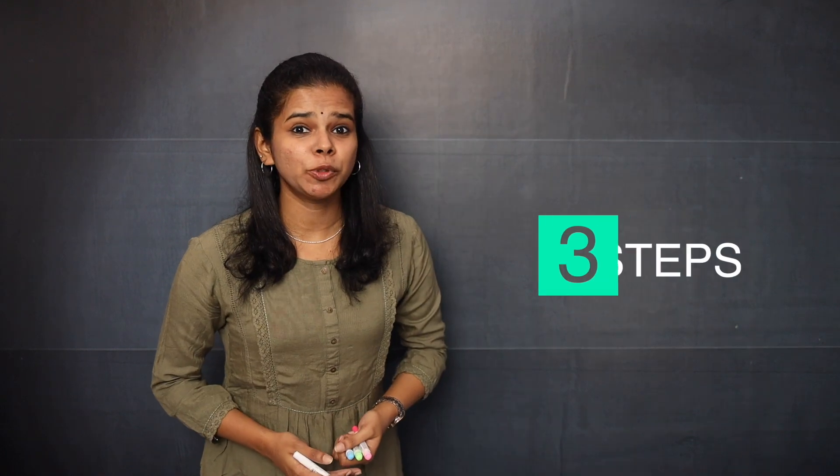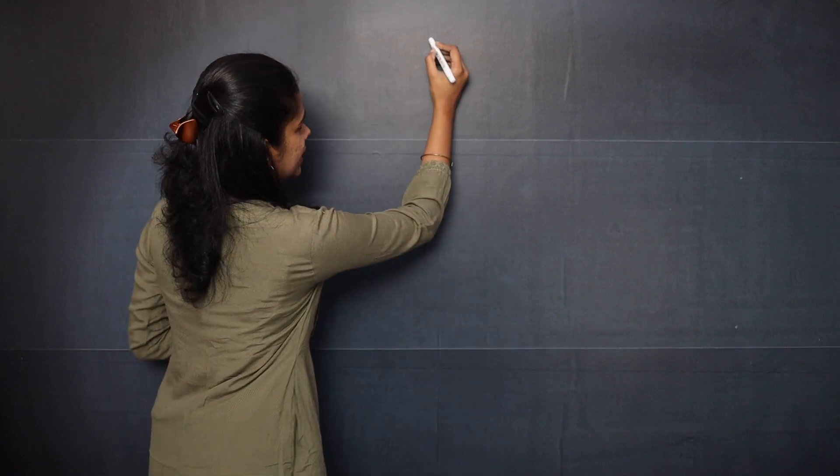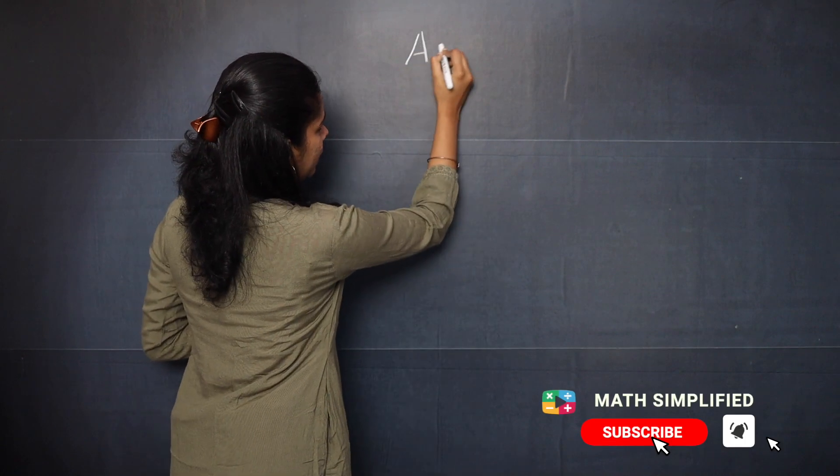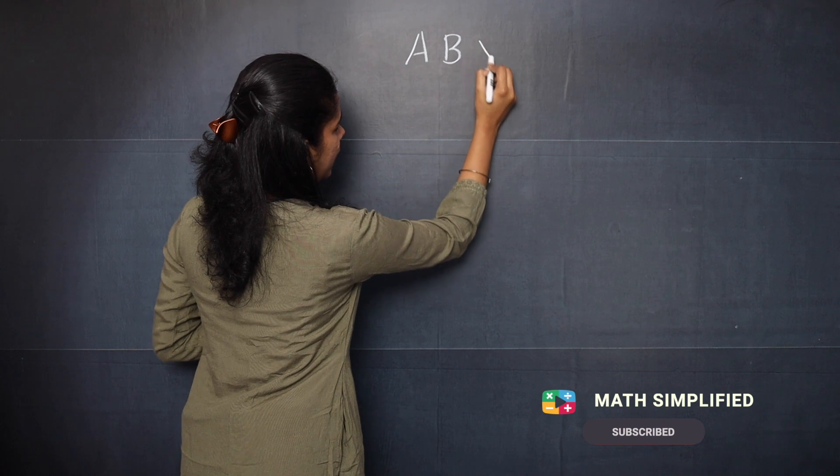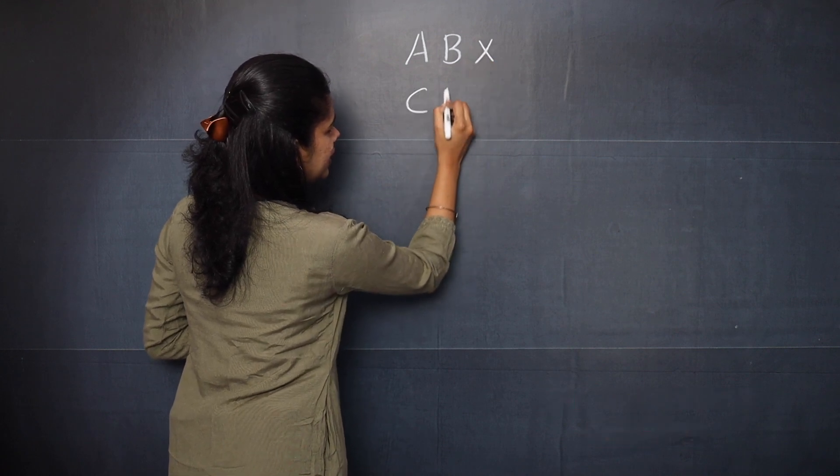There are 3 steps to get the answer. So first let us represent the two-digit multiplication as A, B multiplied by C, D.